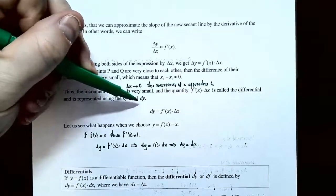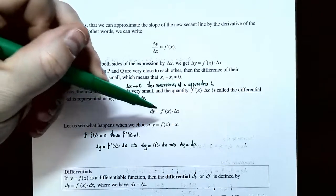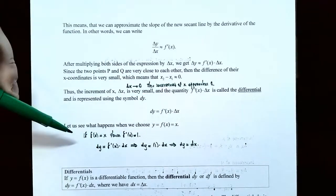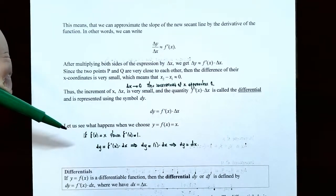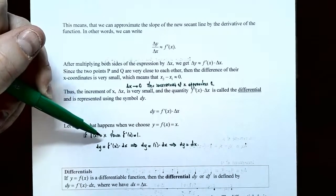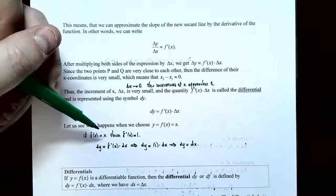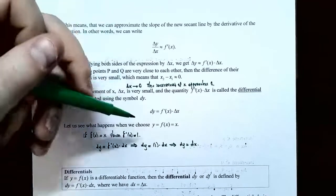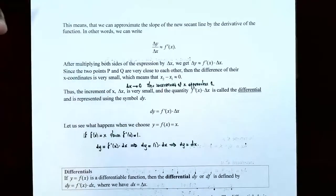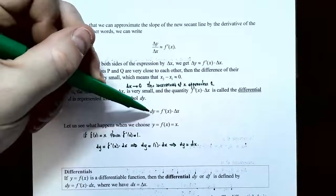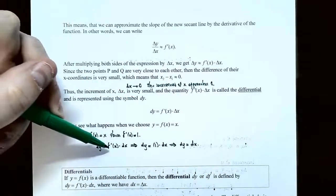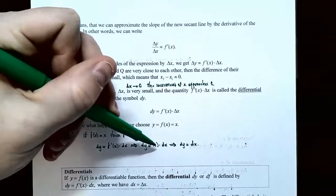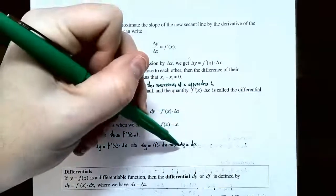The quantity f prime of x times delta x is called the differential and is represented using the symbol dy. So dy equals the derivative evaluated at x times the change in the x values. For example, if f of x equals x, the derivative f prime of x is 1 by the power rule. Plugging into the formula: dy equals f prime of x times dx equals 1 times dx, so dy equals dx.